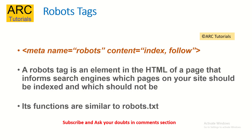Then come the robot tags. These are extremely important because they tell the search engine whether to index or follow a page. These are also meta tags but with different attributes — the name would be 'robots'. A robots tag is an element in HTML that informs search engines which pages on your site should be indexed and which should not. If you have some pages you do not want indexed, you can say 'nofollow'. If you want certain pages to be indexed, you write 'index follow'. Its function is similar to robots.txt, a file uploaded to a web server that gives indexing details, the sitemap, and which pages to follow or index. These robot meta tags provide similar information.